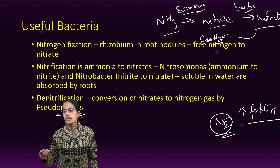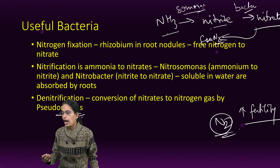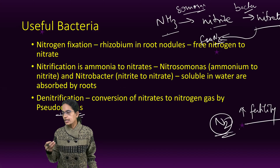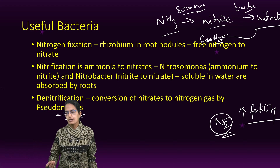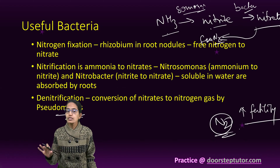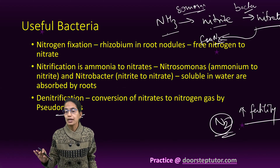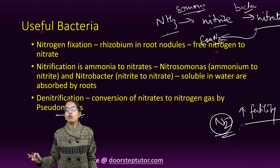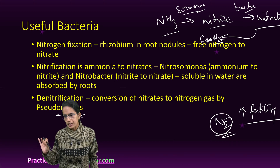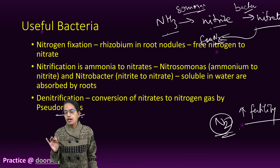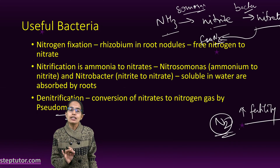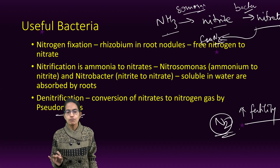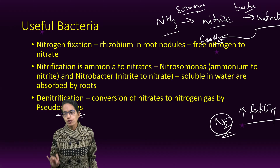In plants, we have leaf spots, soft root, and bacterial galls as common bacterial diseases. Spoilage of food is a common example of bacterial infection.